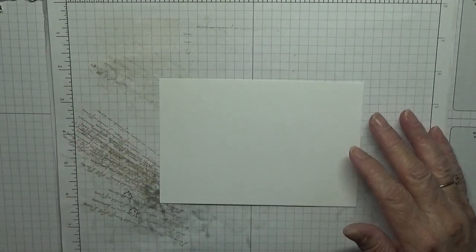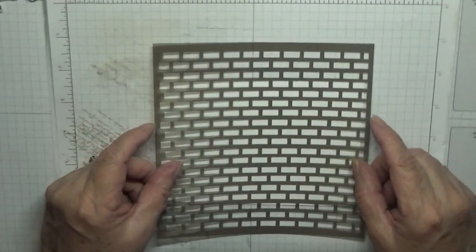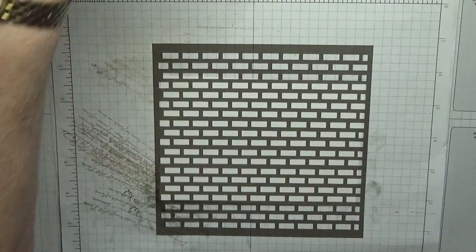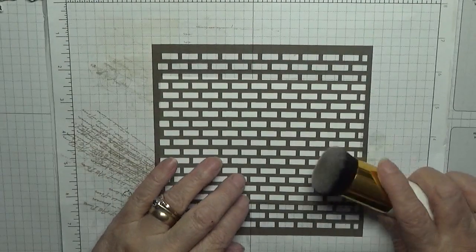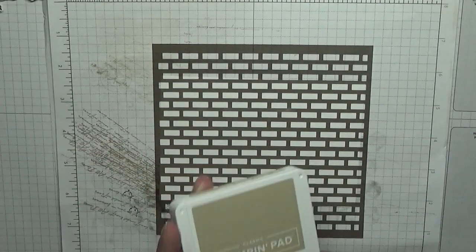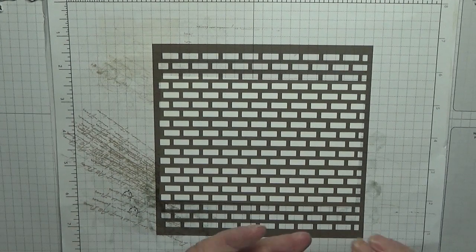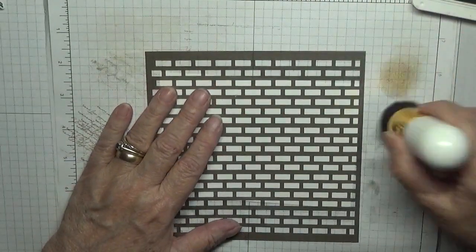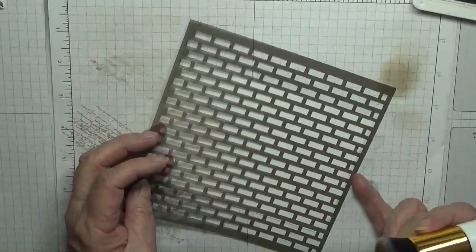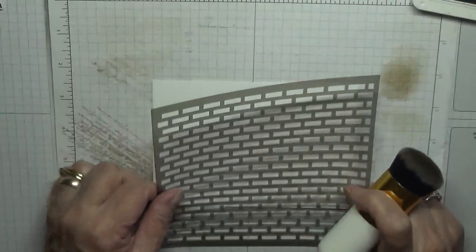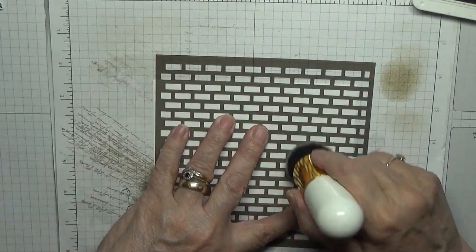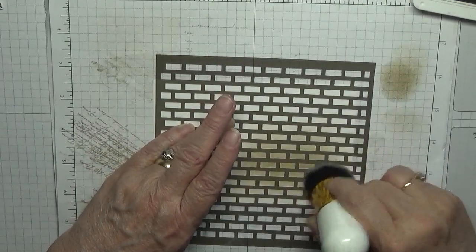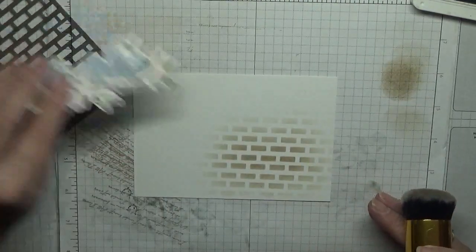I am going to do some stenciling. I have got the brick wall stencil from Stampin' Up and we're going to stencil that on there using a brush and I'm going to be using Crumb Cake. I'm just going to do some wall just like that there and then that sticks on.